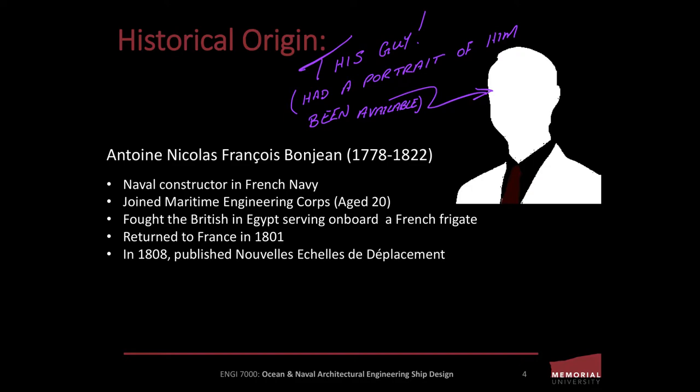In 1798, it's only been 22 years since America's Revolutionary War, and the French are neck deep in a bloody Revolutionary War of their own. The famous British Admiral Lord Horatio Nelson is using his fleet to decimate the French fleet at the Battle of the Nile. Bonjean is dispatched to a frigate fighting the British in Egypt. Despite all the turmoil, war, and general chaos raining down upon continental Europe, we're also in a time of unprecedented industrial and scientific development, and the French are renowned for their extraordinarily elegant approach to shipbuilding.